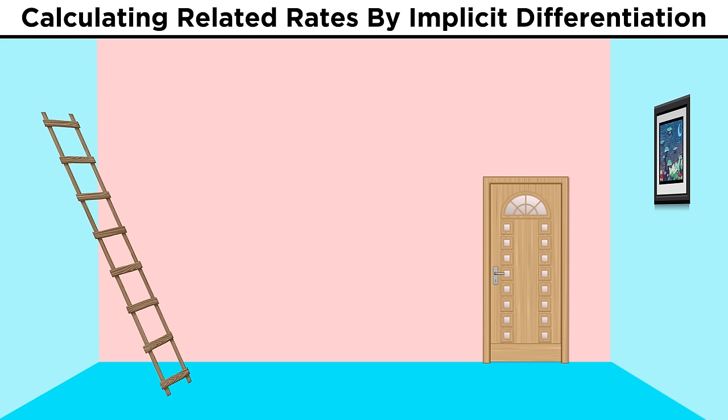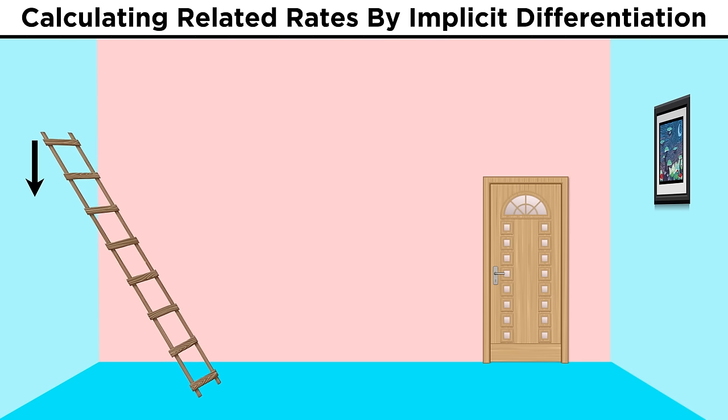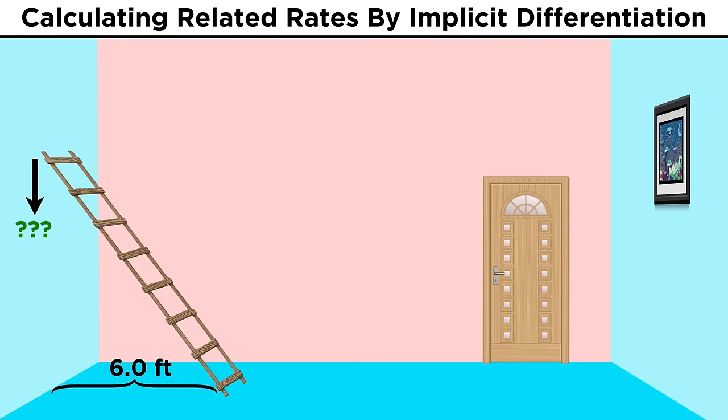Let's try another example. Say we have a ladder resting against a wall. The ladder is ten feet long, and it is sliding away from the wall at a rate of one foot per second. How fast is the top of the ladder sliding down the wall when the bottom of the ladder is six feet away from the wall? Just as with any other example we could look at, we will quickly see that we need to be able to construct equations that represent the scenario.